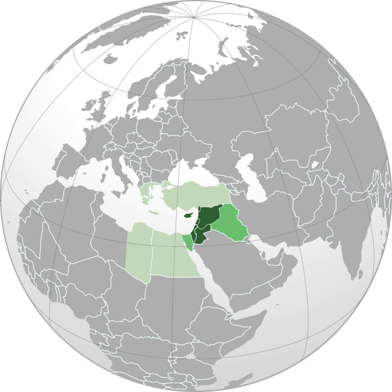In the 13th and 14th centuries, the term Levante was used for Italian maritime commerce in the eastern Mediterranean, including Greece, Anatolia, Syria-Palestine, and Egypt — that is, the lands east of Venice. Eventually the term was restricted to the Muslim countries of Syria-Palestine and Egypt.